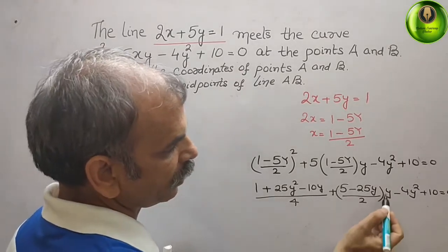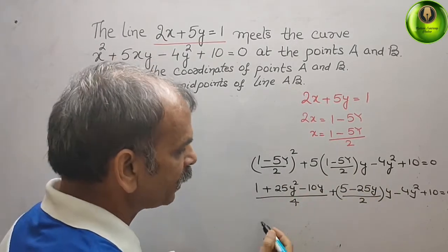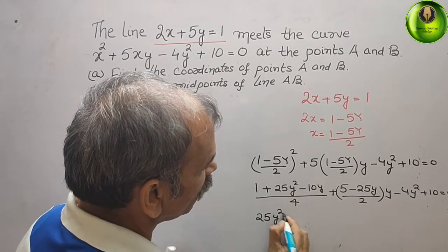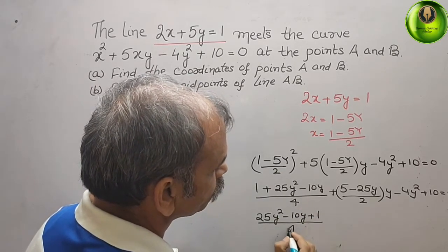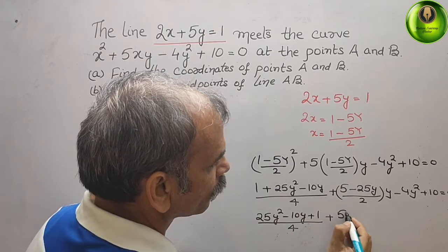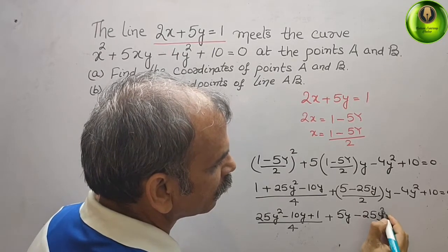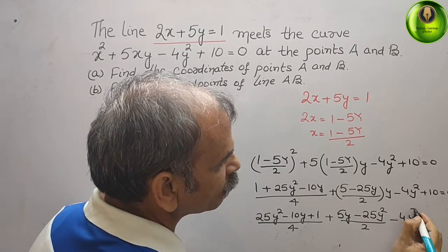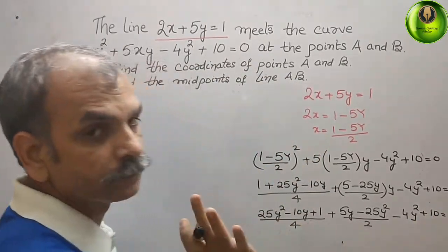Now we multiply out the brackets. Arranging the terms we get (25y² - 10y + 1) / 4, plus (5y - 25y²) / 2, minus 4y² plus 10, equals 0.